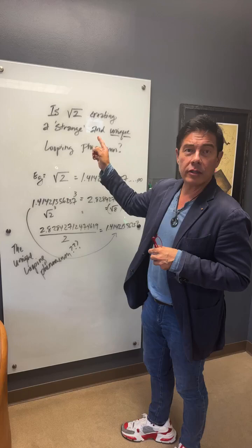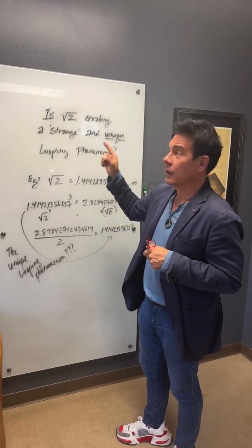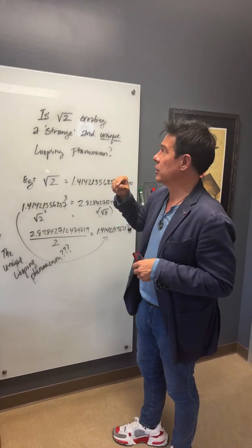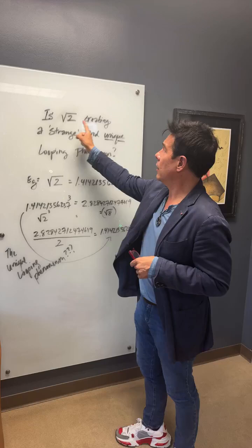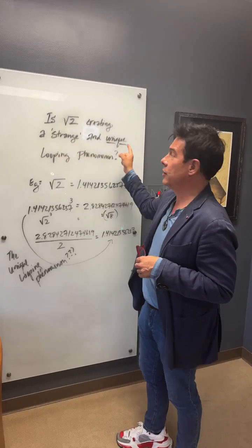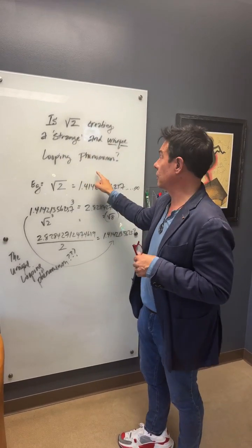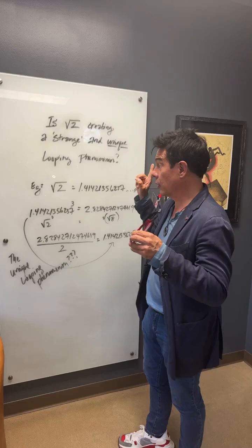But what about this strange looping mechanism that was talked about on Joe Rogan's podcast? Is the square root of two creating a strange and unique looping mechanism or phenomenon? So let's look at this.